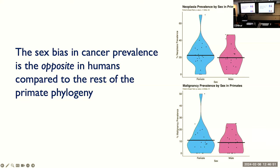Question: Could the male cancer bias in humans be explained by behaviors other primates don't do, like smoking and drinking, which tend to be more common in males? Answer: Yes, a lot of liver cancer in males is thought to be driven by risk-taking behavior in males — higher propensity to engage in risky behaviors. That could be the case. I mentioned yesterday there's no good way to test that directly, but this data would add to that narrative. Then you arrive at the follow-up problem: if that explains male bias in humans, why is there a female sex bias in non-human primates? It goes back and forth.